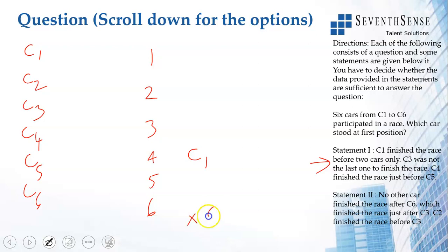C3 was not the last one to finish the race. C4 finished the race just before C5. C4, C5 could be anywhere. I cannot say which one is 1st. I cannot answer using statement 1 alone.